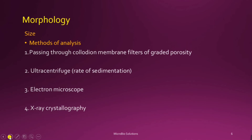Now we will see the morphology of the virus. The size of the virus varies from 20 to 400 nanometers. There are a few methods of analyzing the size of a viral particle: passing the virus through colloid and membrane filters of graded porosity, which filters the virus according to size so the size can be calculated; by ultracentrifugation, observing the rate of sedimentation; through electron microscopy; and by using X-ray crystallography.